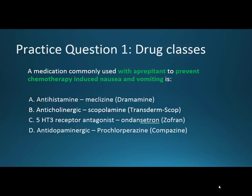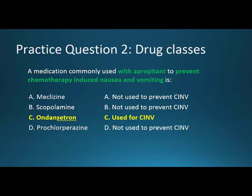Now we'll go over some practice questions. A medication commonly used with aprepitant to prevent chemotherapy-induced nausea and vomiting is: A) meclizine, B) scopolamine, C) ondanzetron, or D) prochlorperazine. The correct answer is C, ondanzetron. Meclizine, scopolamine, and prochlorperazine are incorrect as they are not usually used to prevent chemotherapy-induced nausea and vomiting.